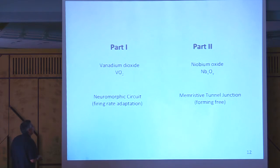So the talk will be divided in two parts. The first part will be on vanadium oxide, which I learned that this is a material of interest here in the audience. And we build a small circuit out of that, neuromorphic circuit, for the so-called firing rate adaptation, which is an important ingredient in biology. And another one is more related to device physics. So we build up a memristive tunnel junction, which is forming-free. And I will start with part one and then go over to the device.